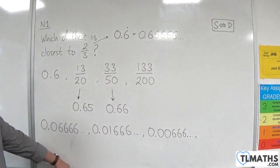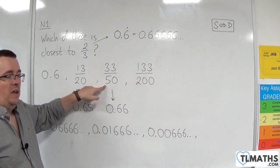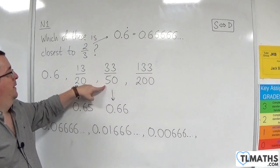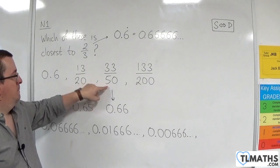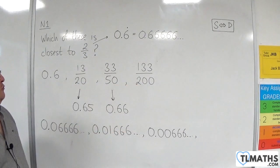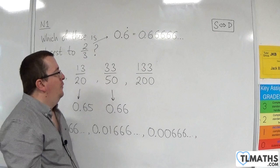Okay, and that's clearly smaller than that one. So this is the current running favourite, 33 over 50. Right, so we've got the last one, 133 over 200.